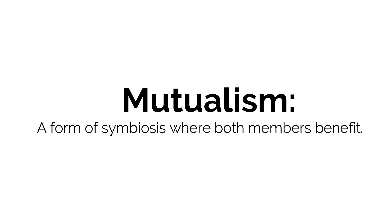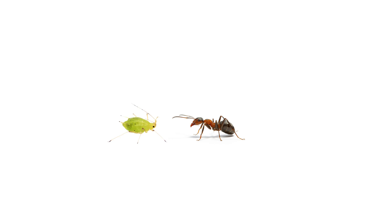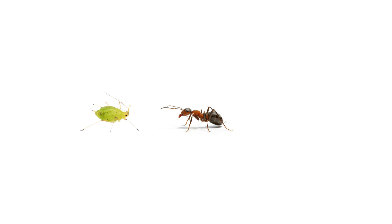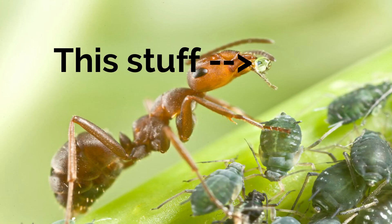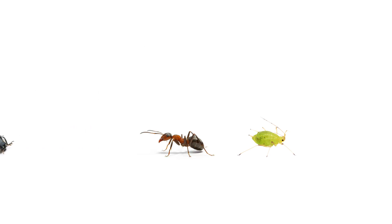Let's start with the simplest form of Symbiosis: Mutualism. Mutualism is a form of Symbiosis in which both parties benefit out of the relationship. One basic form of Mutualism is between ants and aphids. While the aphids are feeding, the ants tend to stroke them into releasing a sweet secretion called Honeydew. The ants feed off of this Honeydew, and in return, they protect the aphids from their predators like the ladybug.